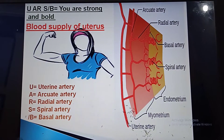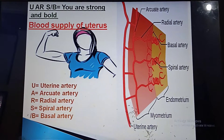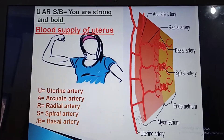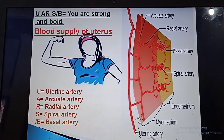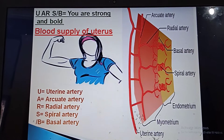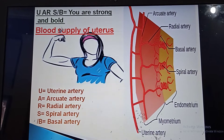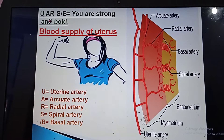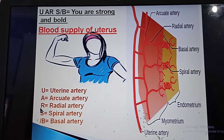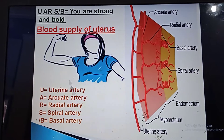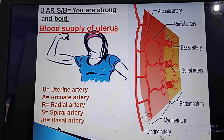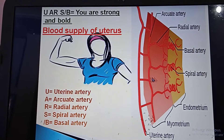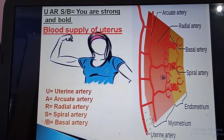The blood supply of the uterus can be memorized very easily using the mnemonic 'You Are Strong and Bold.' 'You' stands for uterine artery, 'AR' for arcuate artery, then radial artery, 'Strong' for spiral artery, and 'Bold' for basal artery.